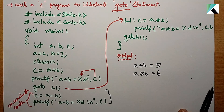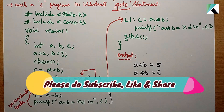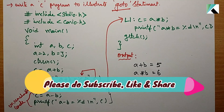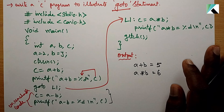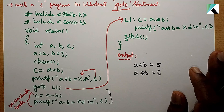This is the example for the goto statement. To explain the code, understanding this example program is essential. If you have to explain the goto statement, this program is compulsory — you will use the theory part along with this example.